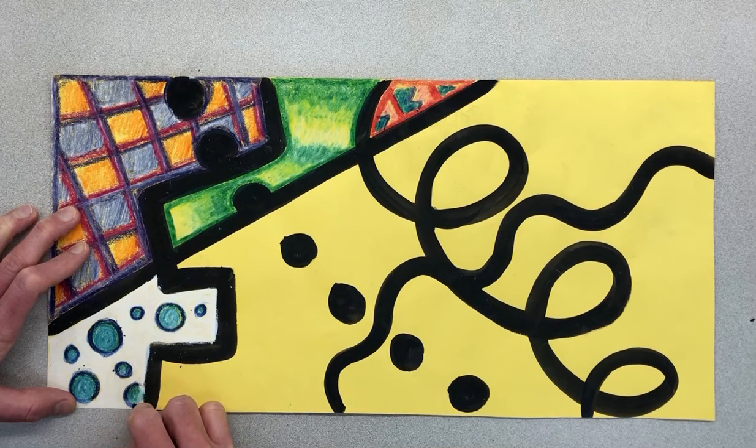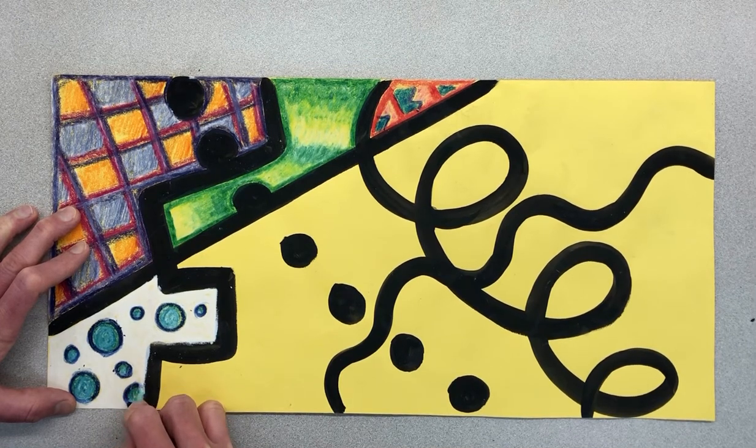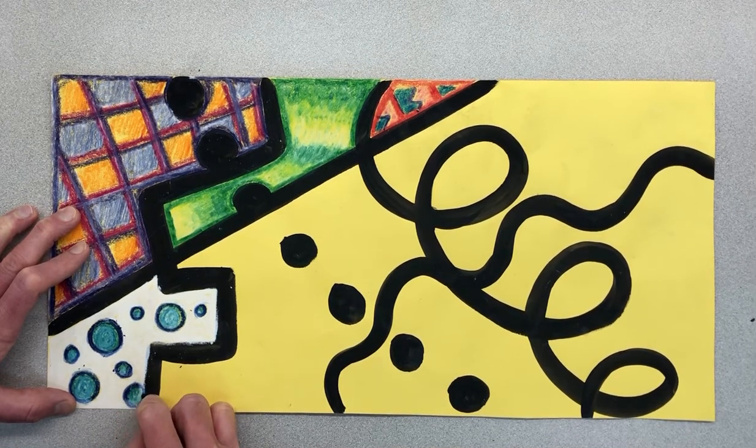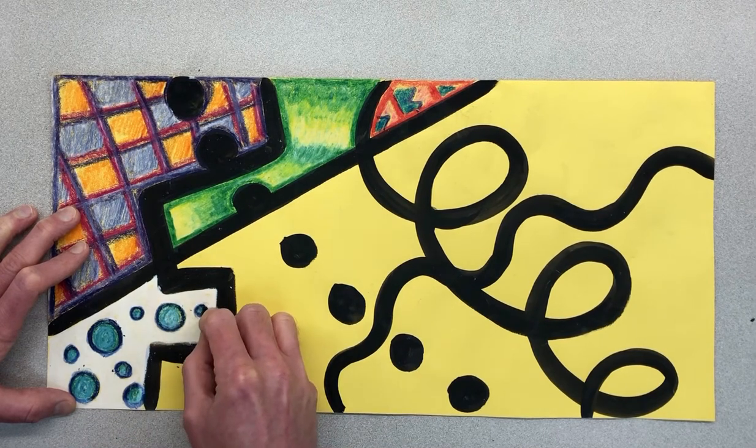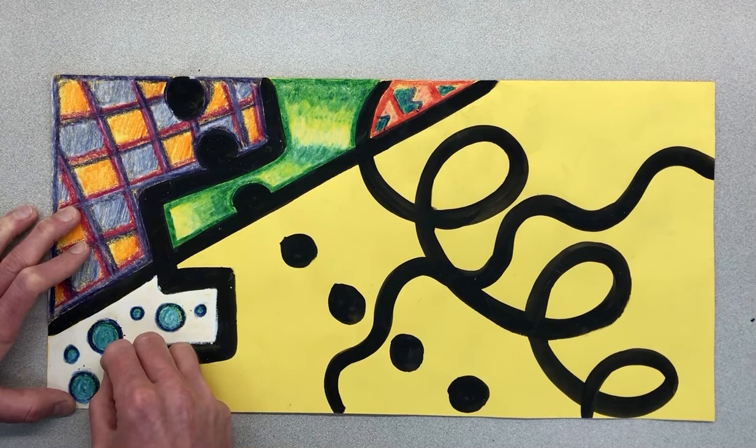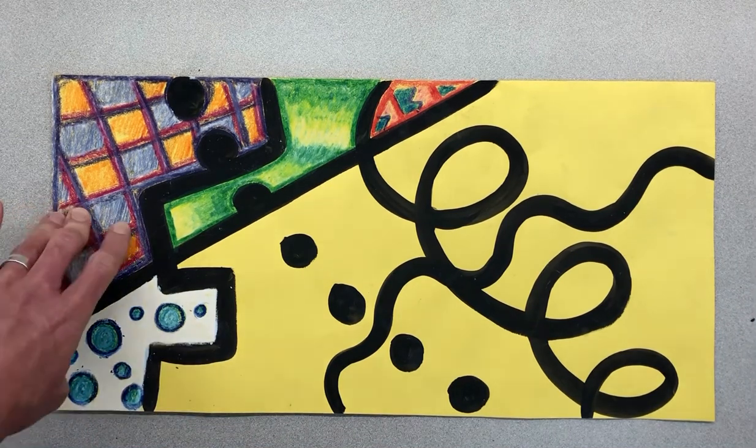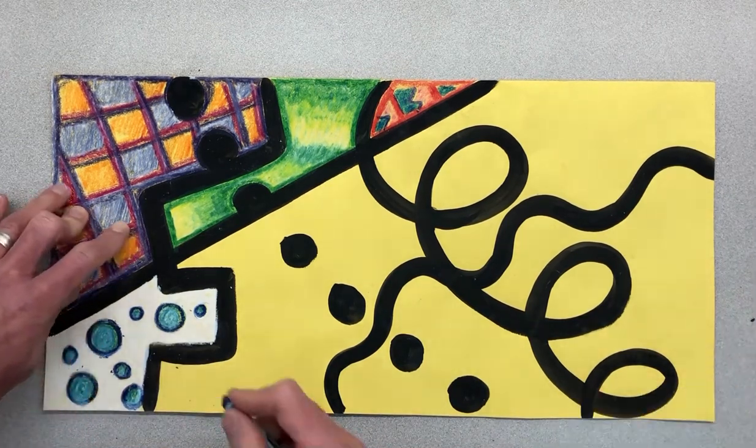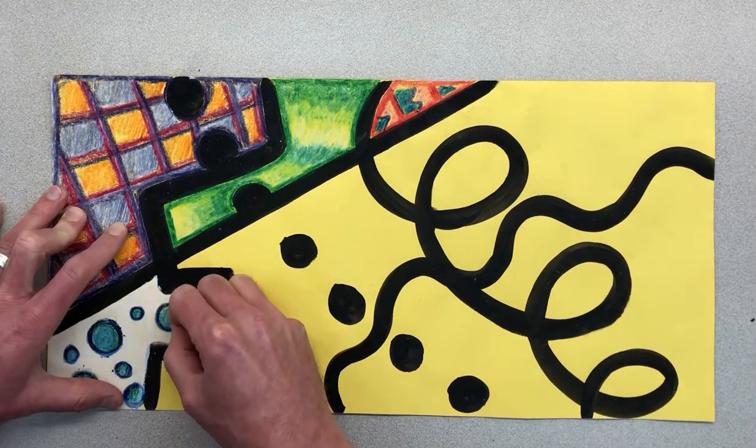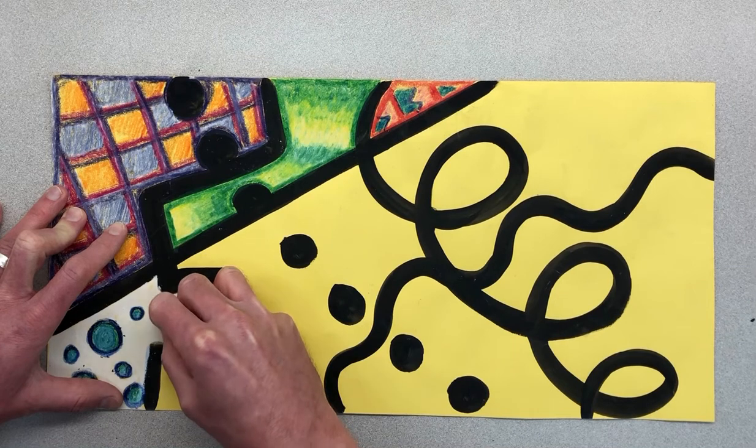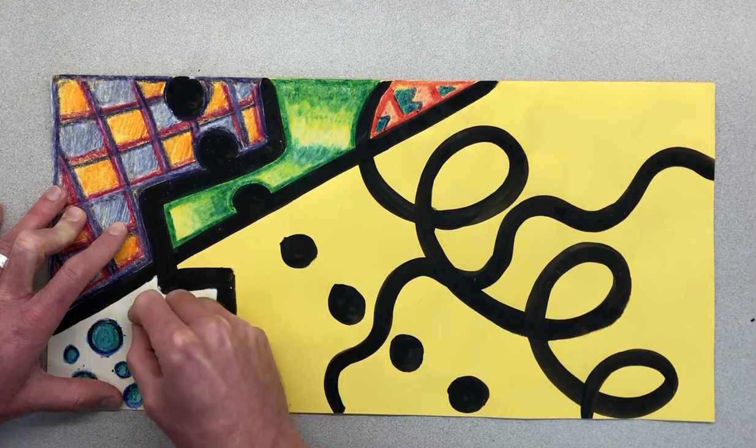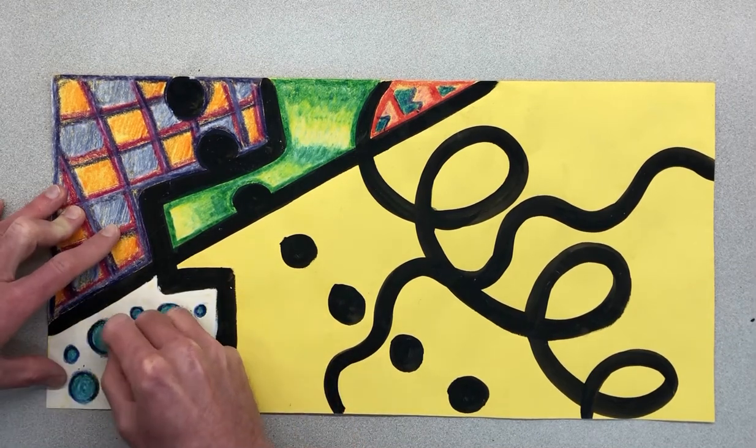And then once I do all of that darker blue, I could pick something on the color wheel. Like blue is next to green or I could do blue and purple, but I chose to do blue and light blue. So I'm going to press that on.